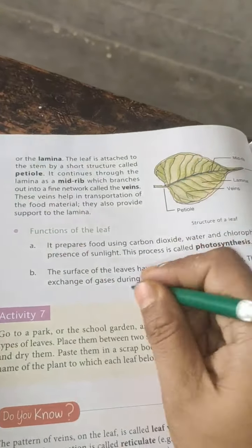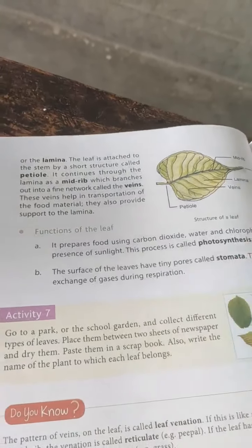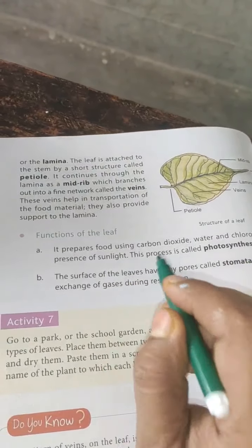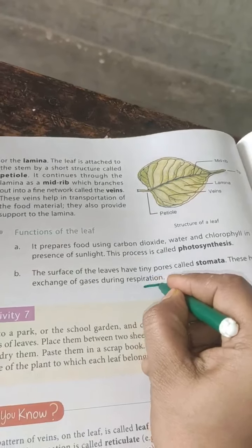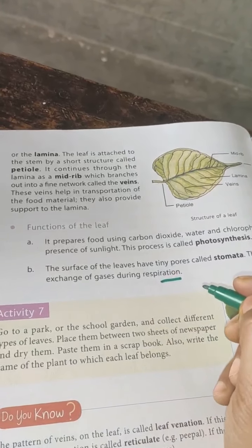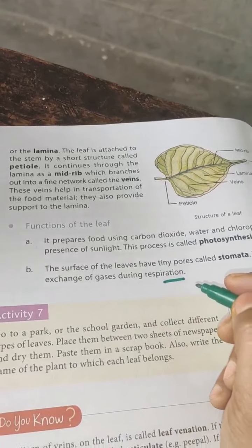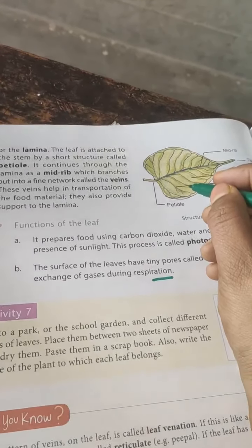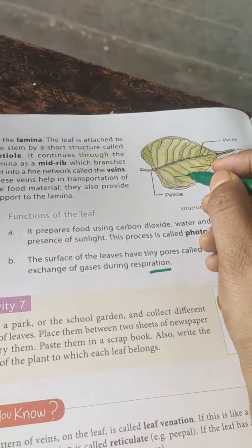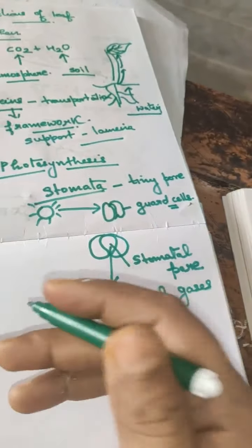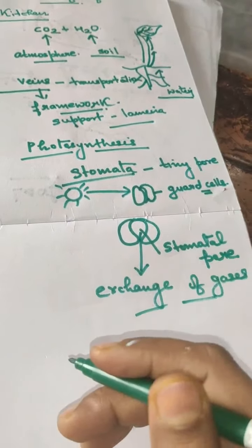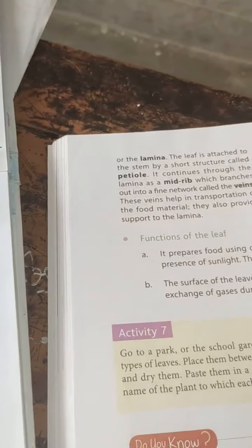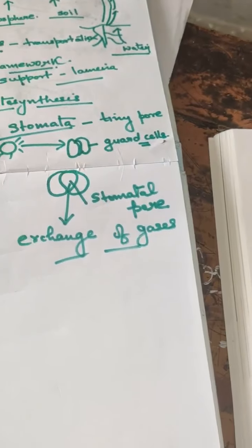So there are two main functions: one, the leaves cook the food for the plant; second, the stomata help in exchange of gases — not only for photosynthesis but for respiration also. Respiration is a similar process to breathing, meaning the living plant also needs oxygen to survive. Plants take in carbon dioxide as well as oxygen for the breathing process.